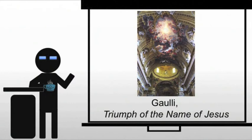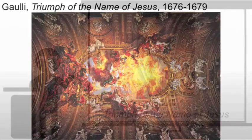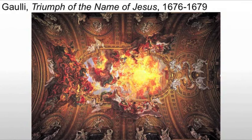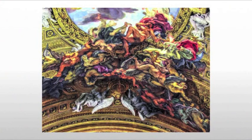Here we're looking at the Triumph of the Name of Jesus, and this is done over the nave in Il Gesù, the mother church of the Jesuit order. The mural opens the ceiling to the spiritual expanses of heaven — a window into the Catholic afterlife and a strong statement to the congregation of Il Gesù.